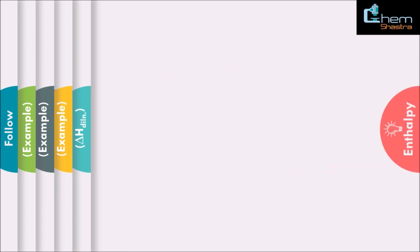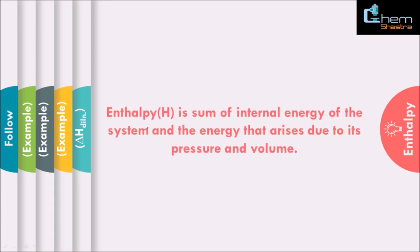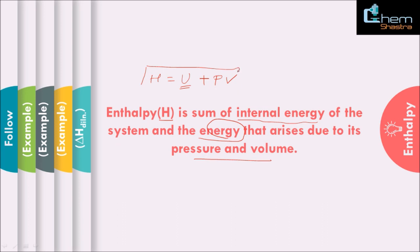Let's begin. Enthalpy is represented by the symbol H. It is the sum of internal energy, represented as U, plus the energy that arises due to pressure and volume. So the mathematical expression for enthalpy is: H = U + PV. If we look at the change in enthalpy, delta H comes out to be delta U + P*delta V.